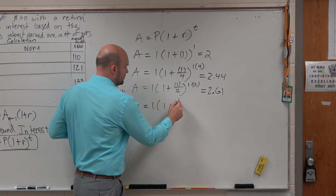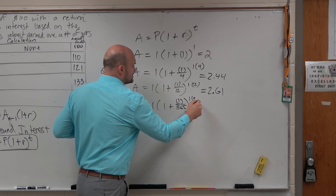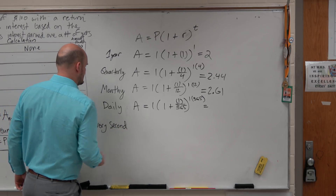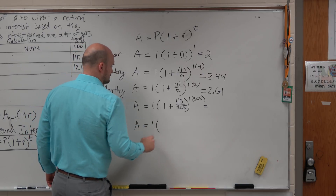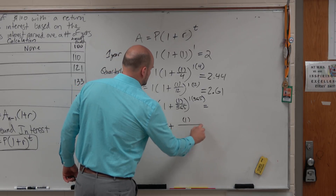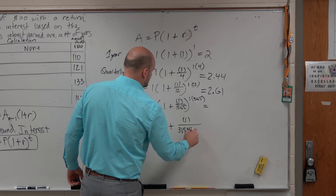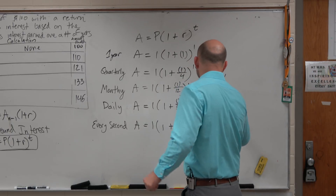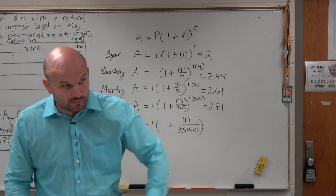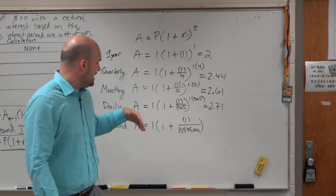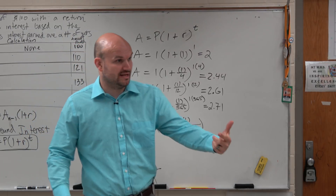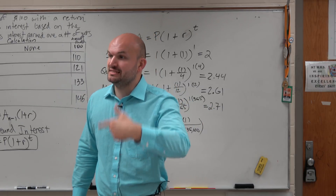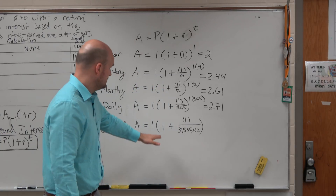And then for daily, it would be 1 plus 1 over 365, raised to the 365. Now, if we wanted every single second — there are 60 seconds in a minute, 60 minutes in an hour, 24 hours in a day, and 365 days in a year. So 60 times 60 times 24 times 365.